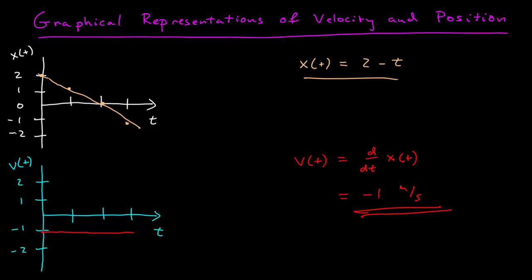Well, if I have a line here, the slope is the same everywhere. The slope of this function is, in fact, negative 1, which is the velocity function. Okay, that's easy enough.